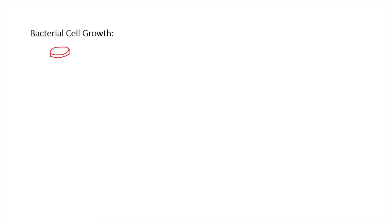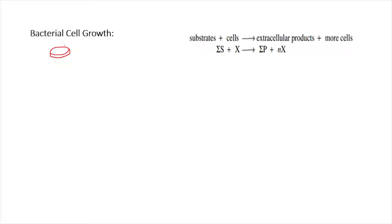In bacterial cell growth you require a media, and in this media you add bacterial cells. Bacterial cells will grow by utilizing this media, and certain bacterial cells produce some essential compounds like antibiotics. Part of the nutrients is utilized for bacterial cell growth and part is converted into production of useful compounds. So substrate plus cells gives you extracellular product plus more cells.